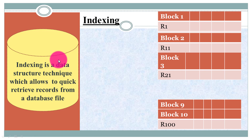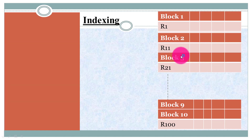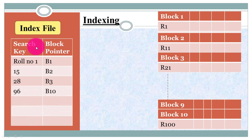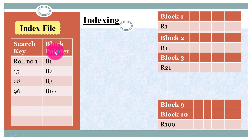Now let's consider this file is a sorted file. To make an index file for this file, there are two columns. This is the index file, and the index file contains two columns: first is the search key, and the second column is for the block pointer. The search key is the search attribute on which value we are going to search. For example, if I am going to search by roll number, then my search key value becomes roll number with the corresponding block pointer.